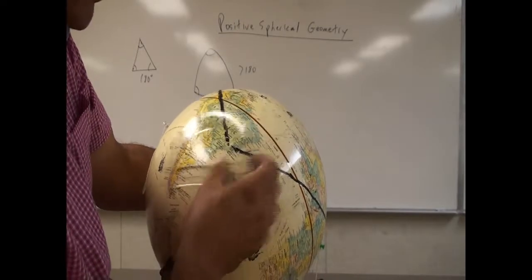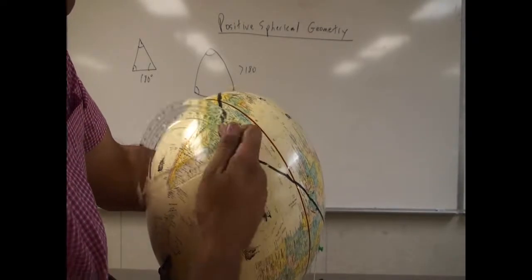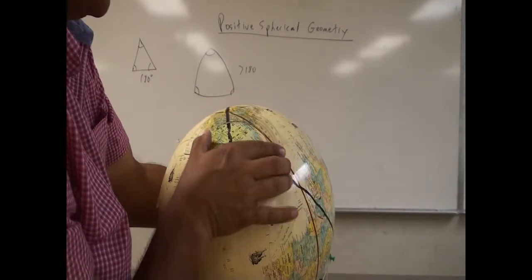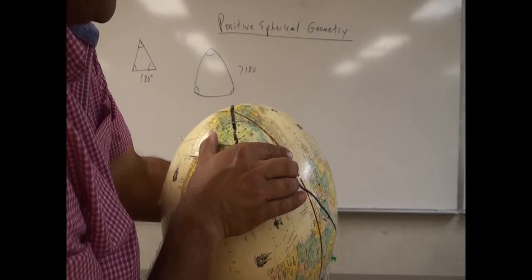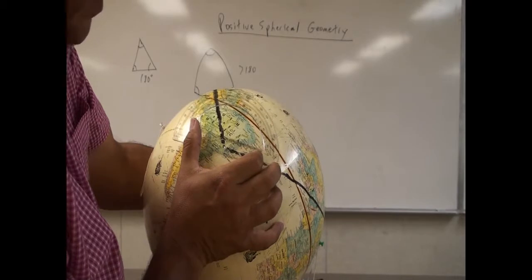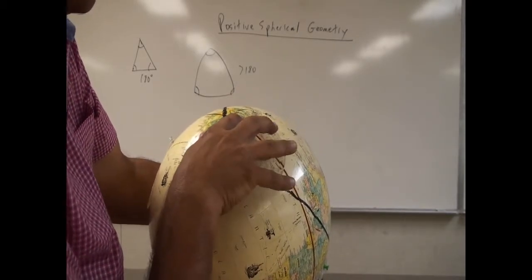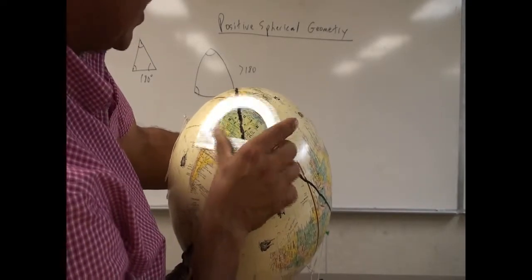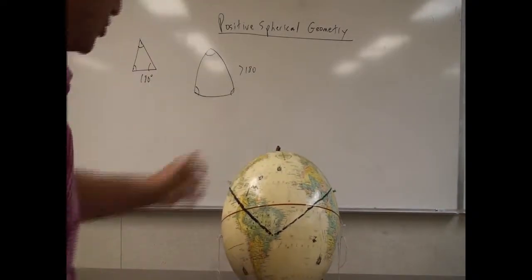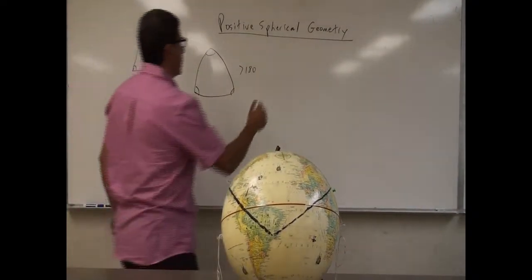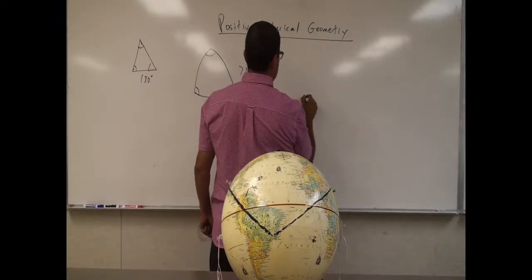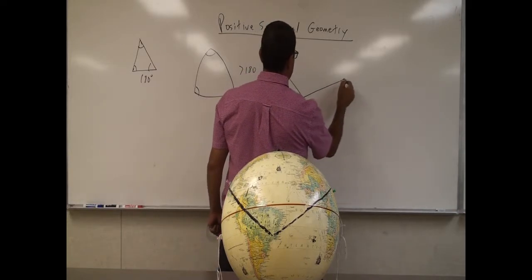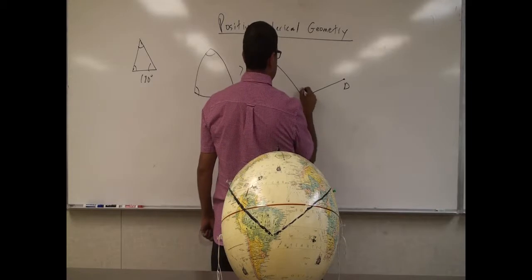I'm going to put the protractor down at the vertex and measure the angle. You just line up the zero degrees with one of the lines, and then the other tells you the angle. This one shows the angle is about 115 degrees — you can tell it's an obtuse angle, greater than 90. So the angle at L.A. between L.A.–Rio de Janeiro and L.A.–Dubai is 115 degrees.